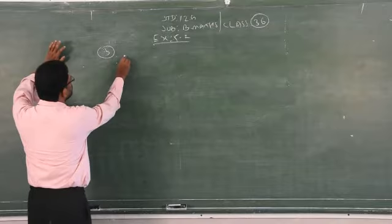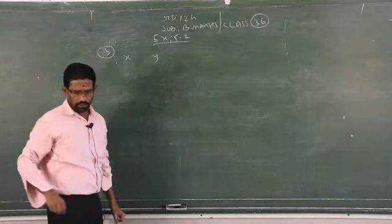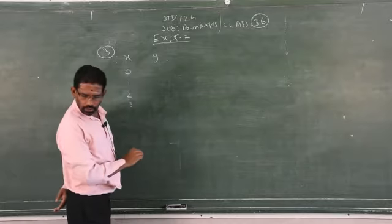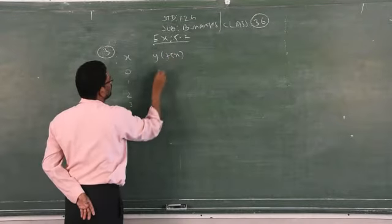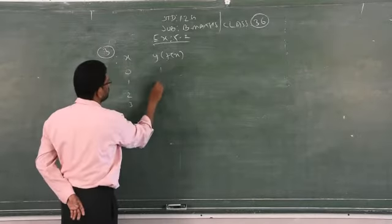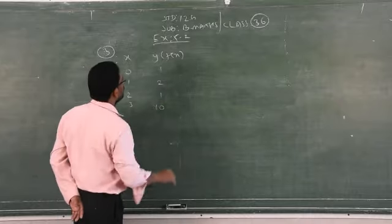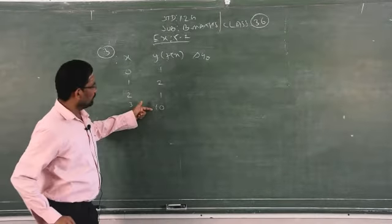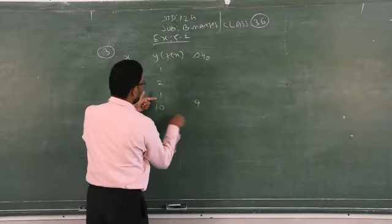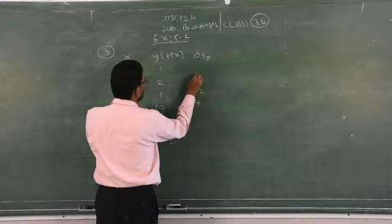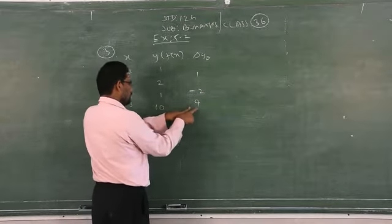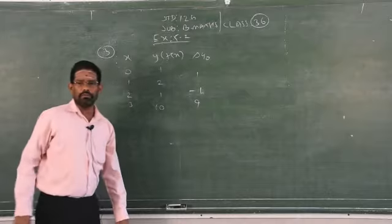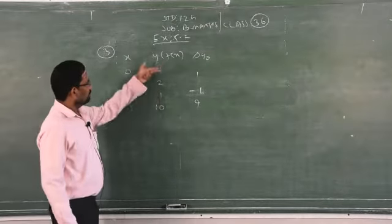For the forward formula, first you write the tabular column: x values are 0, 1, 2, 3 and y values — since f(x) is y — are 1, 2, 1, 10. Now you go for delta y naught. Delta y is found by subtracting: 10 minus 1 is 9; 1 minus 2 is minus 1; 2 minus 1 is 1. Be careful of the subtraction order in the y column.